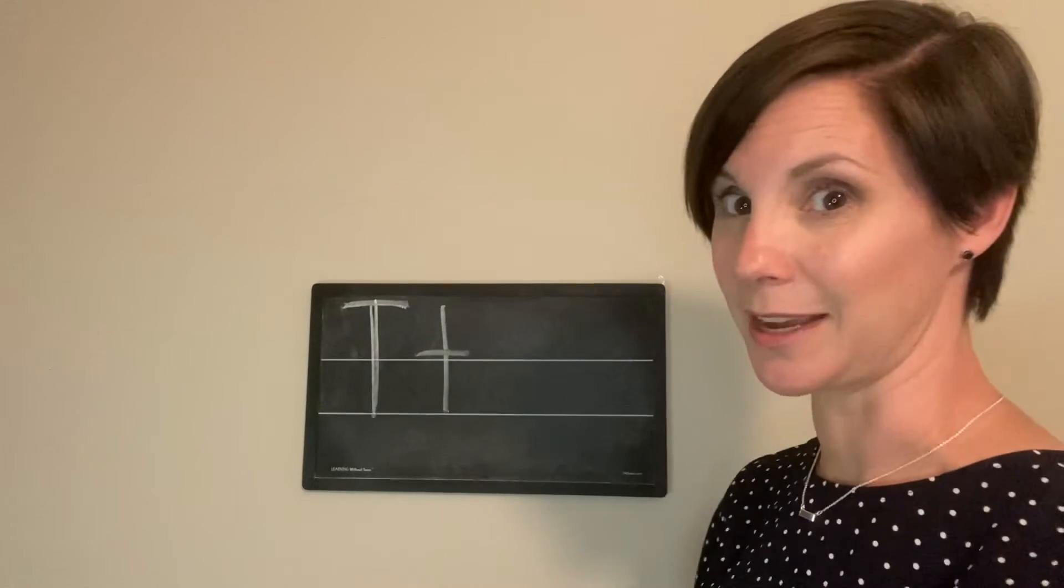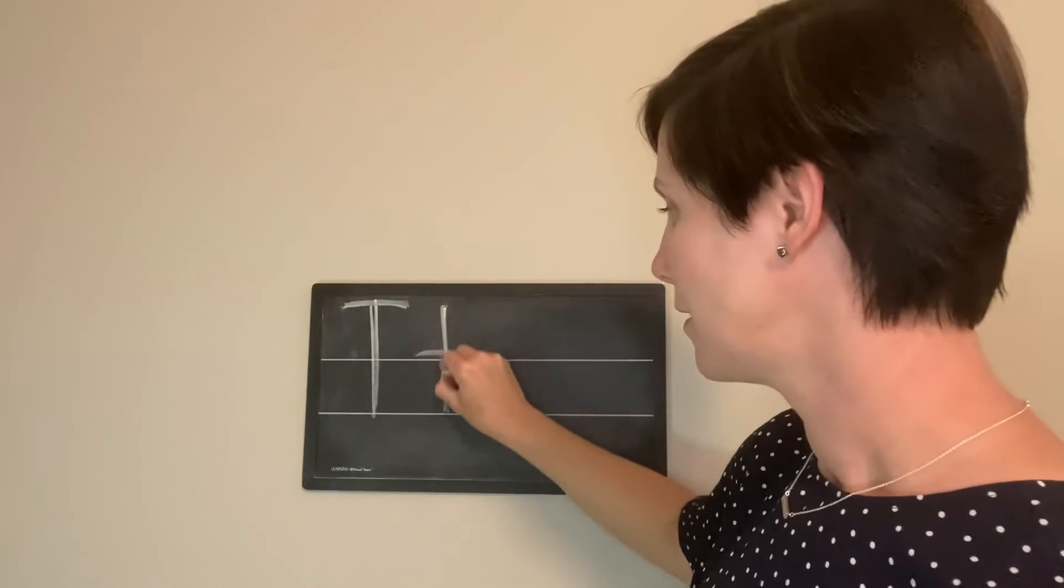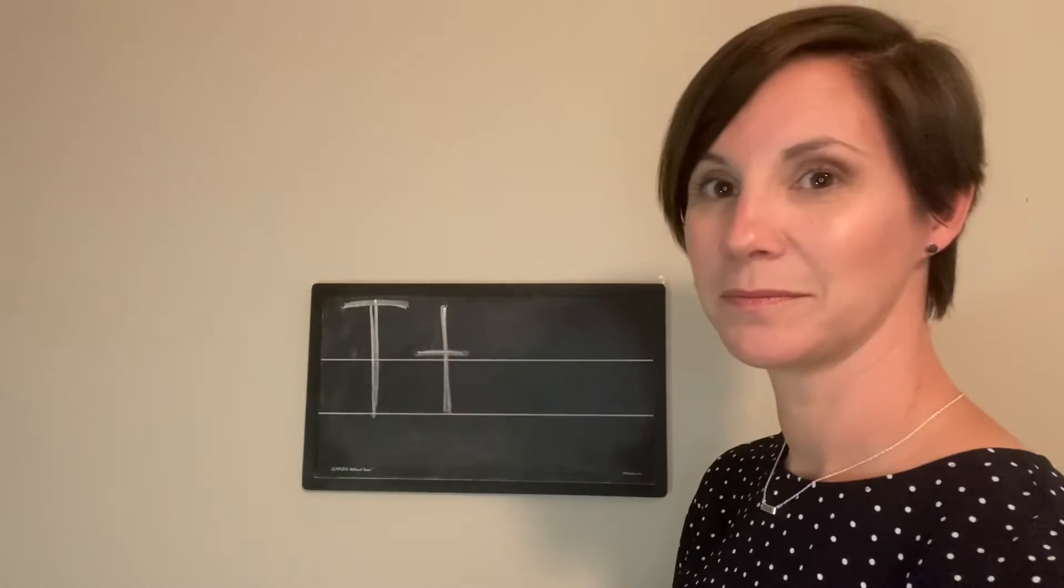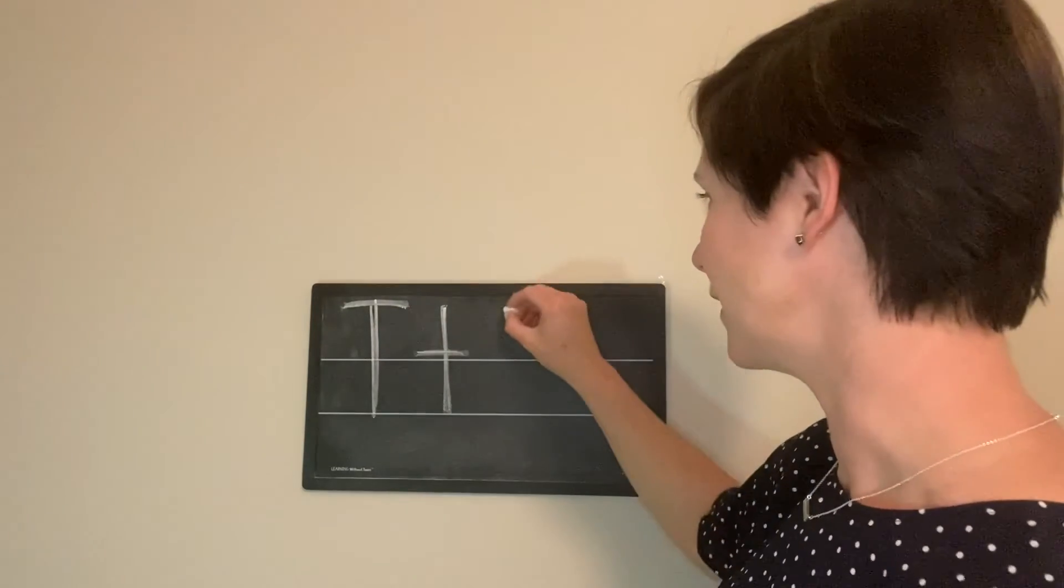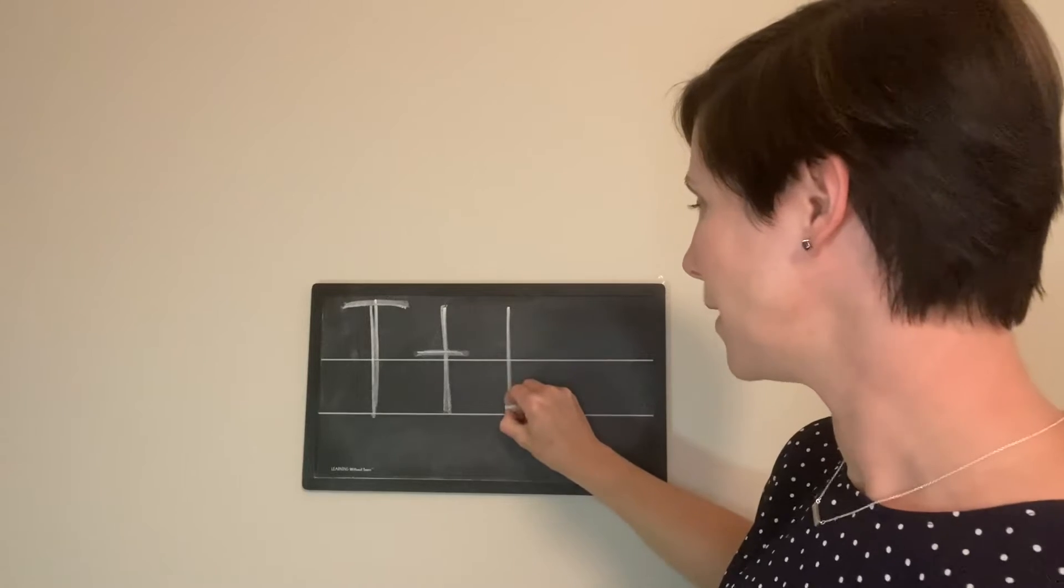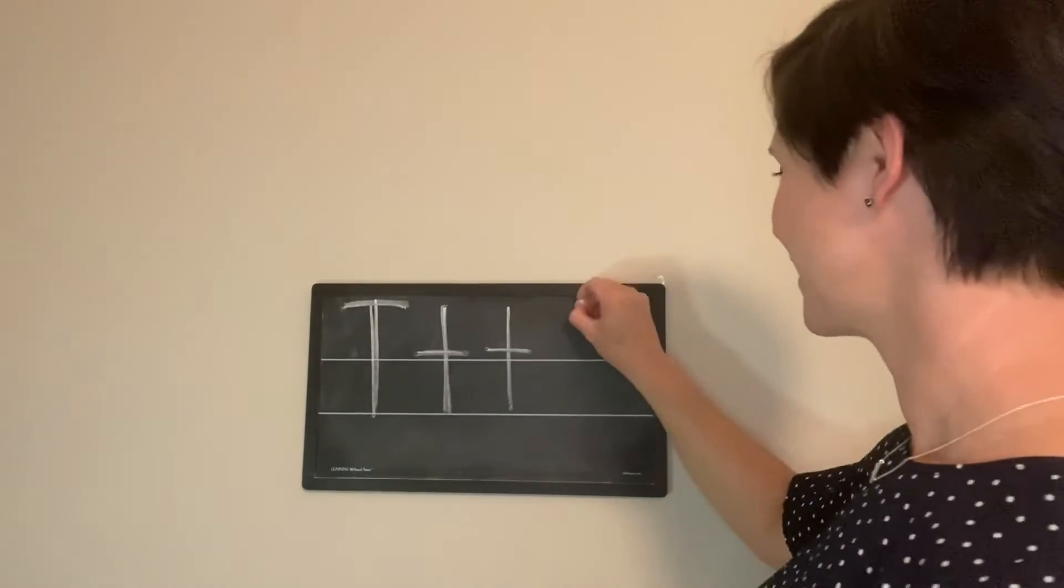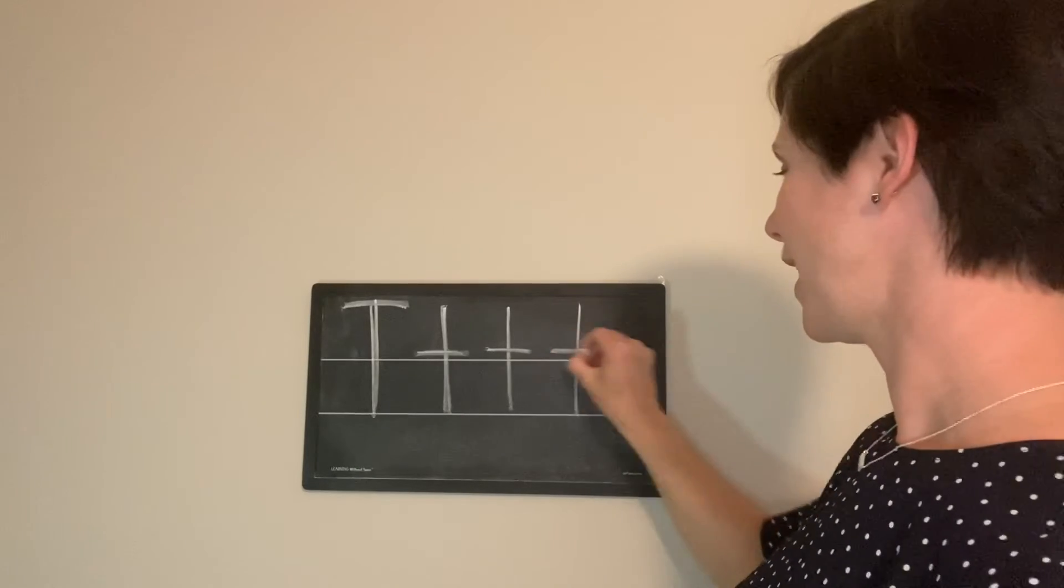And for our lowercase t we'll do the same thing. Slide down, bump, and across. And then let's try again. Slide down, bump, and across. And one more time. Slide down, bump, and across.